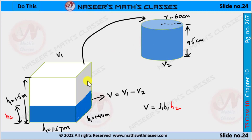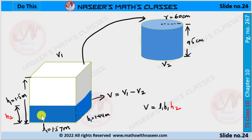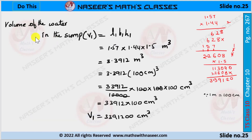After filling the overhead tank with water from the sump, there is some water left in the sump. So its volume V is equal to V1 minus V2. The height of the water remaining in the sump is called H2. We have to find H2, and V is equal to L1 × B1 × H2.